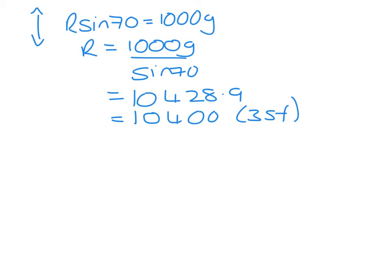Now that we have the vertical, we're going to consider the horizontal. Towards the centre I have R cos 70, and that's going to equal mass, which is 1000, times the acceleration, which is A. Now I need to be really careful here.